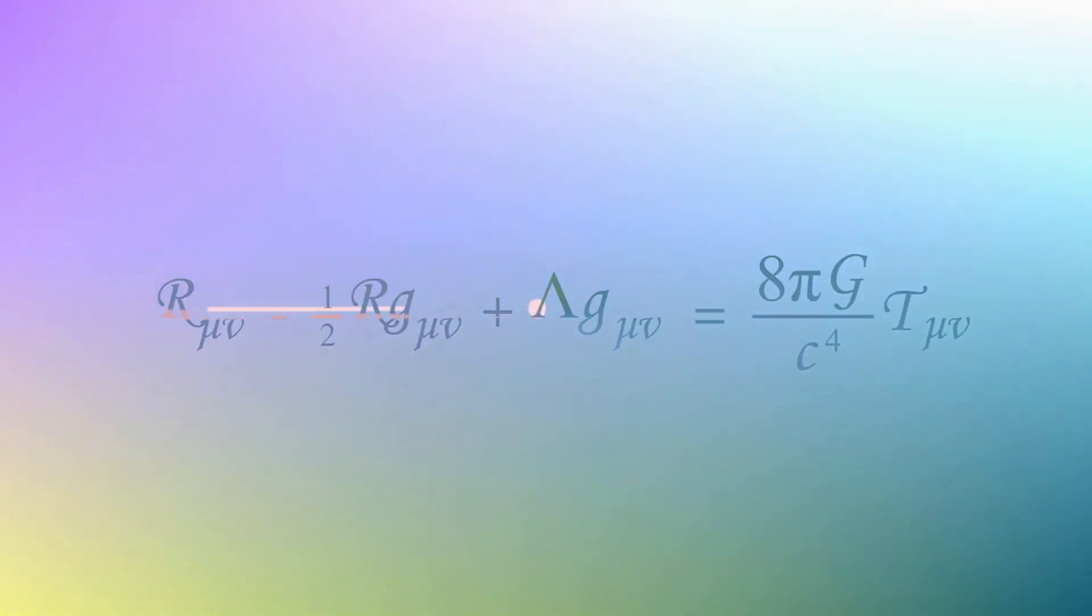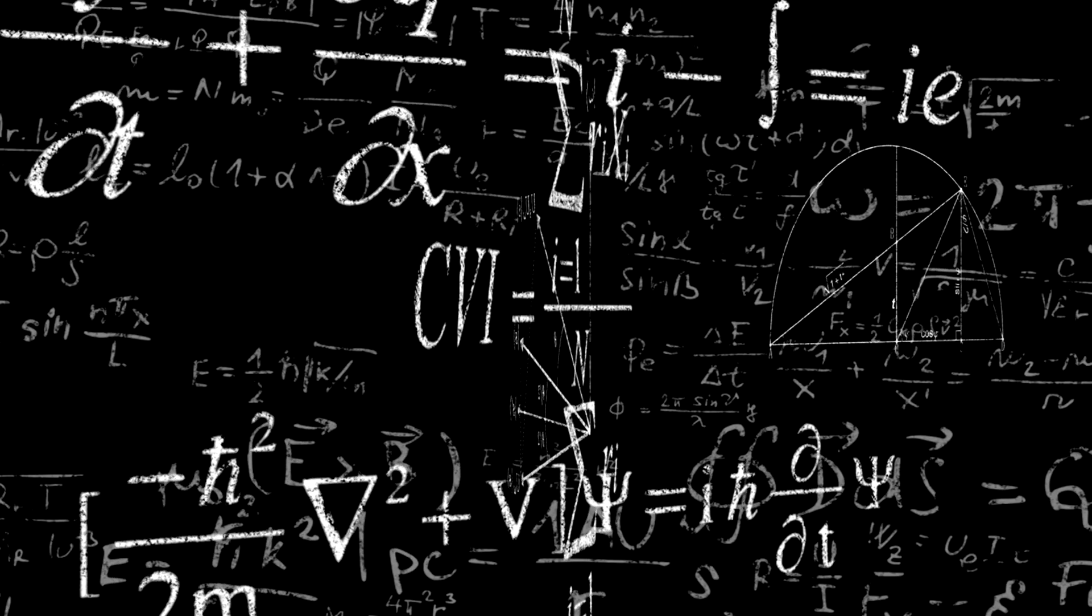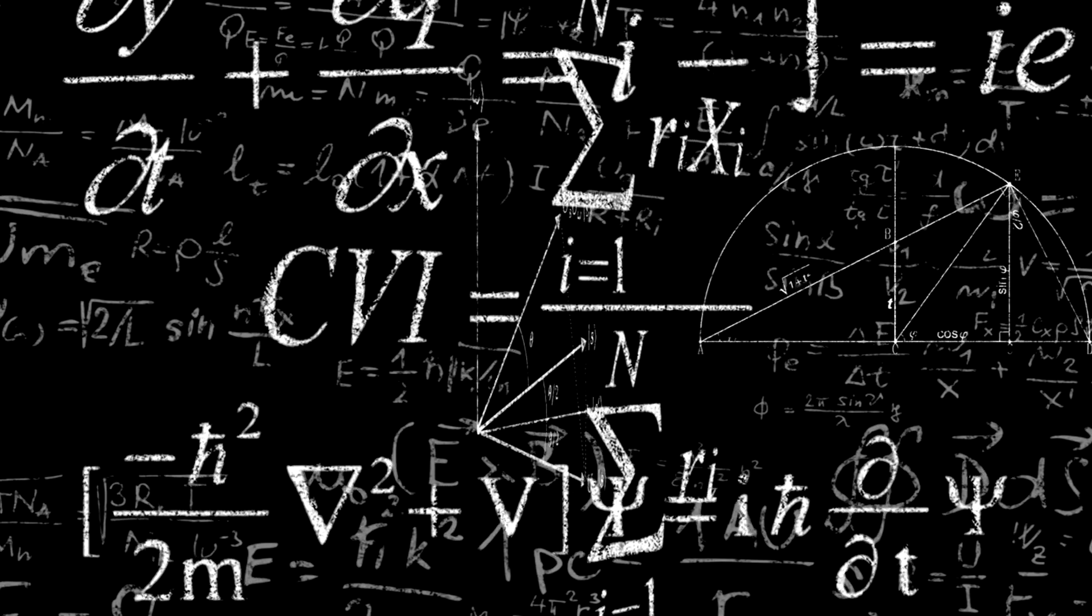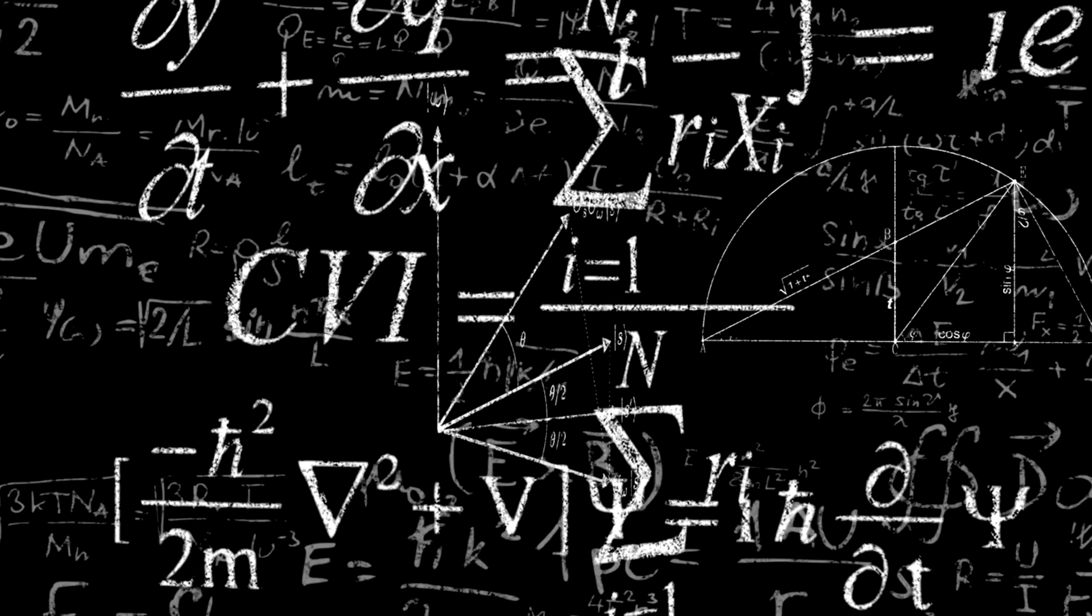The heart of general relativity is the Einstein field equations. These complex mathematical equations describe how matter and energy determine the curvature of spacetime, and conversely, how this curvature affects the motion of matter and energy.